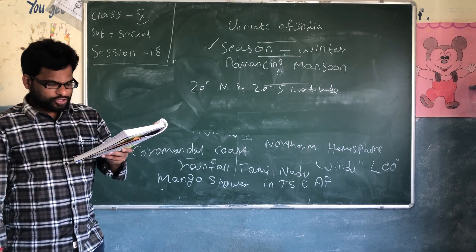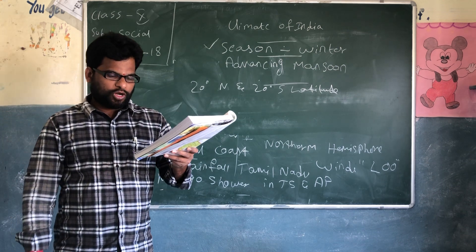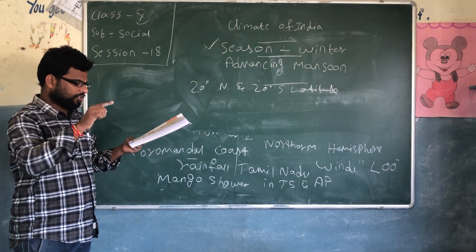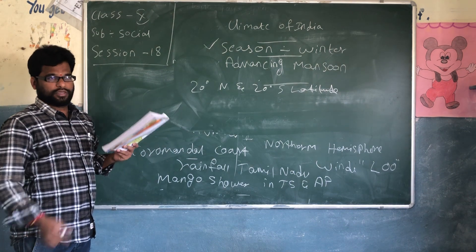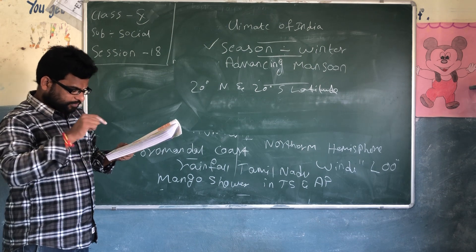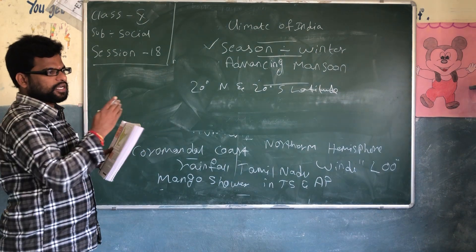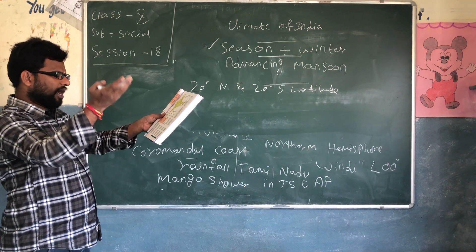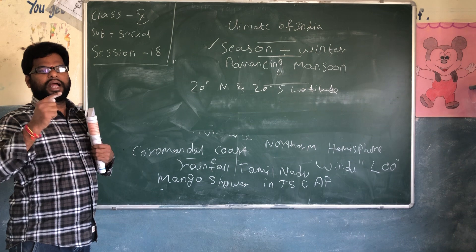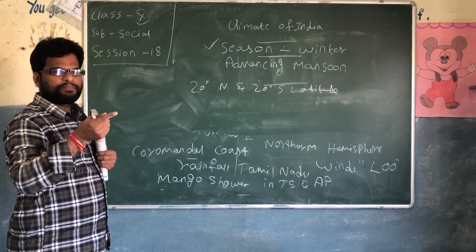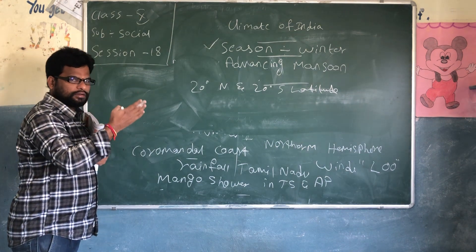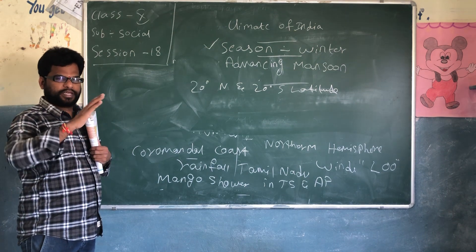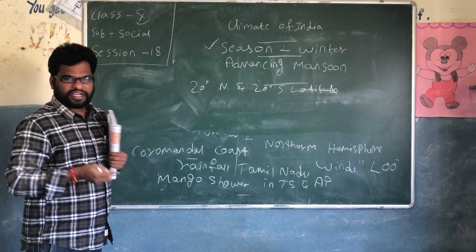The southeast monsoon winds from the southern hemisphere carry moisture as they flow over the Indian Ocean towards the equatorial low pressure zone. The atmosphere flows through the southern hemisphere, and the moisture causes changes in climatic conditions.